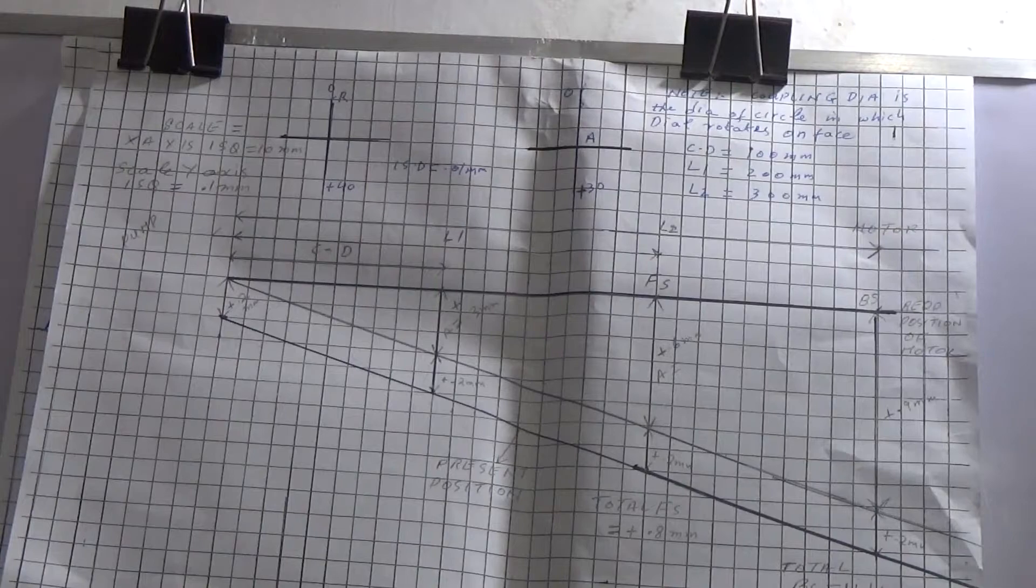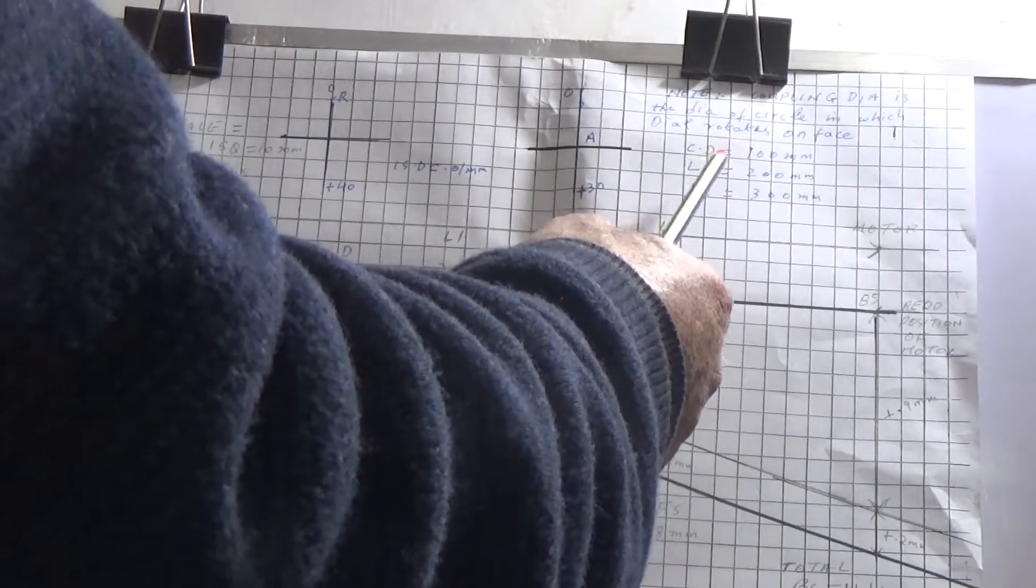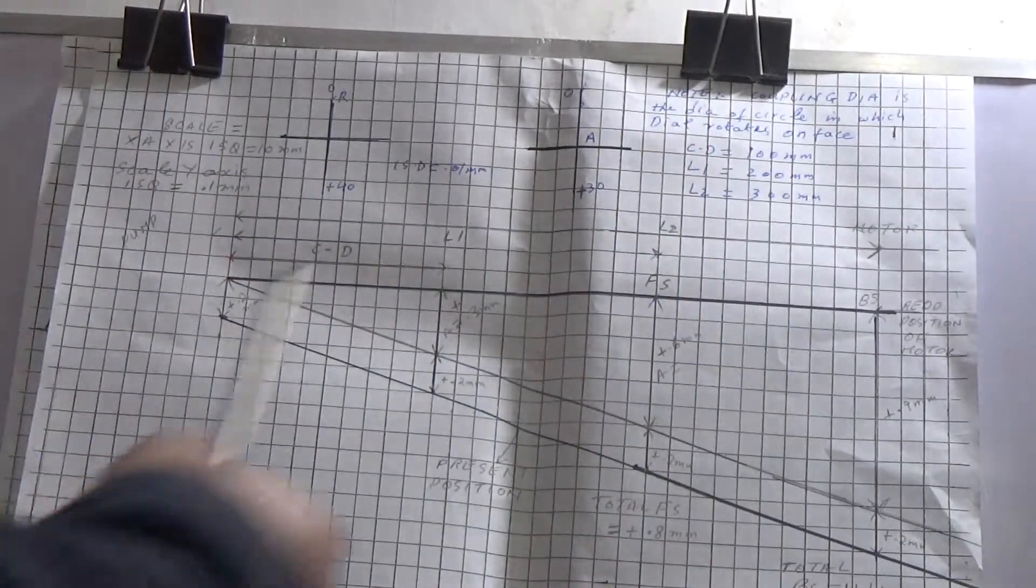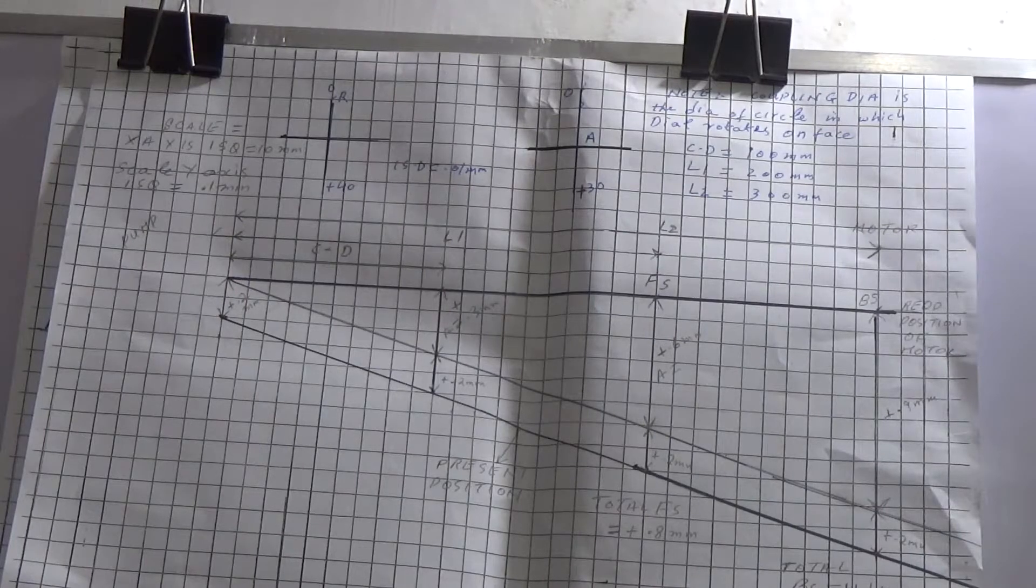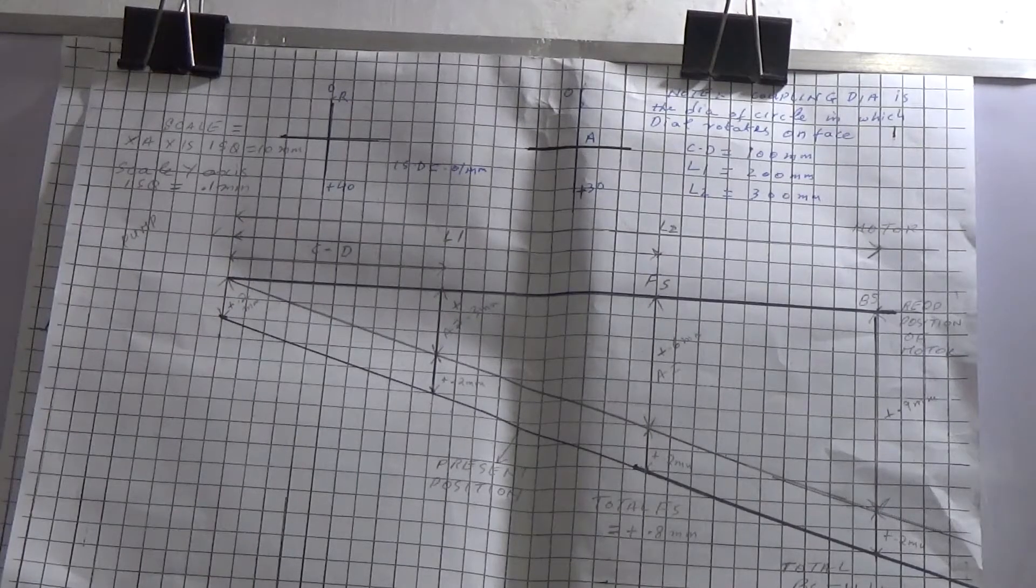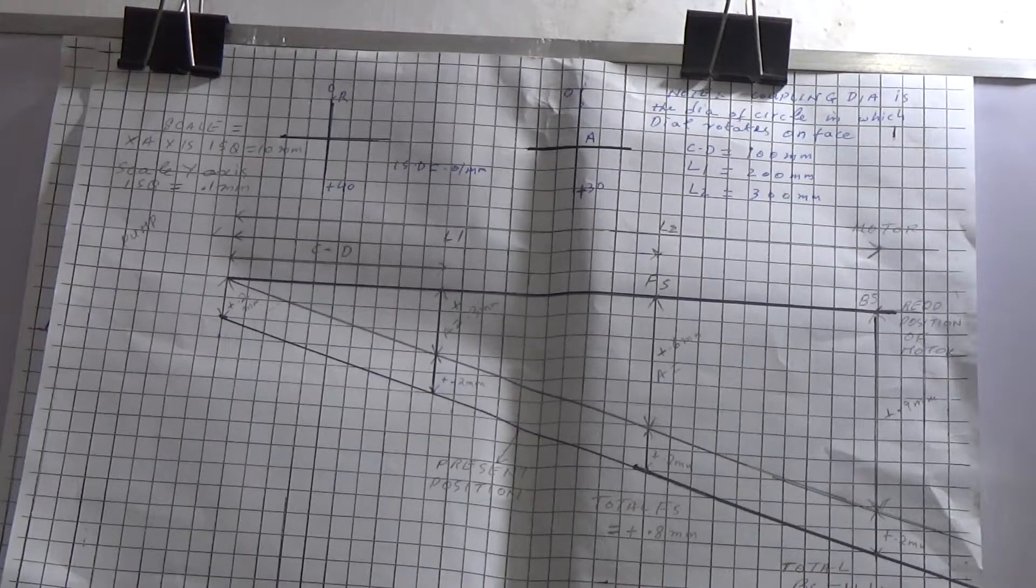So what you have got, you have taken reading coupling diameter L1, L2. You know what is coupling diameter. I am using the name coupling diameter, but actually it is the diameter of the circle in which the dial indicator is rotating on the face of the motor coupling hub.